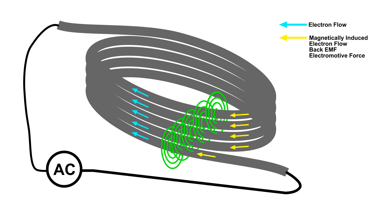Now the AC source is a little less. And look what happens here: when the magnetic fields try to collapse, it induces a current in the same direction as the source.